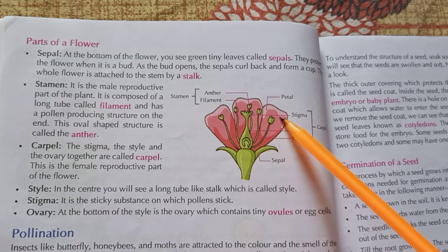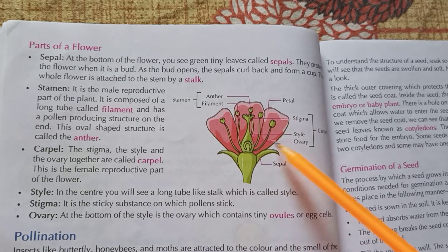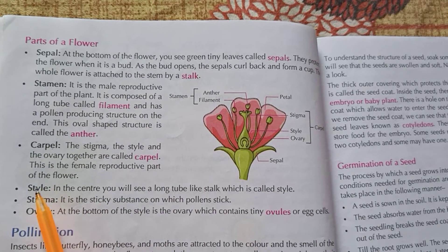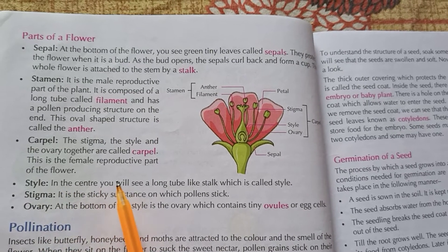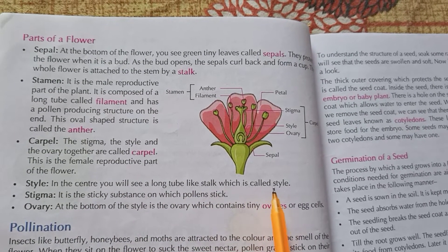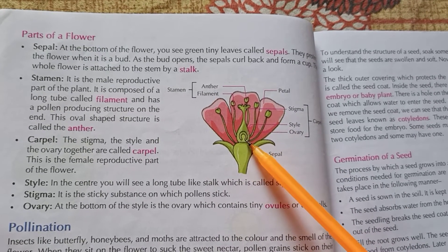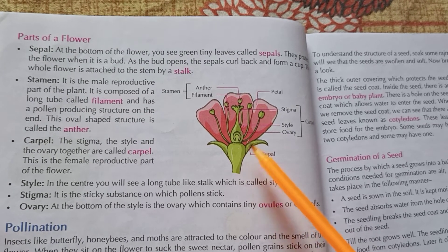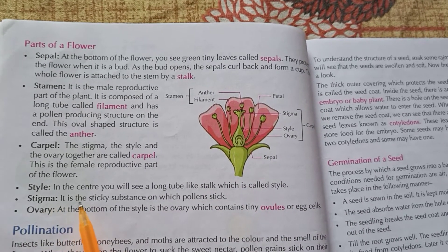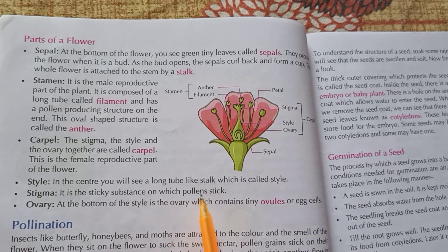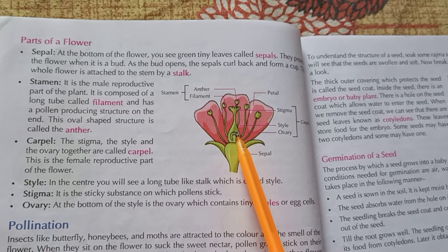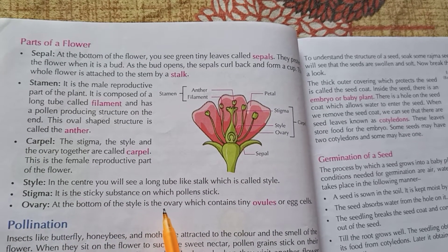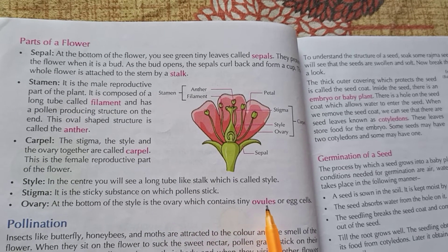This is the stigma. This is the style — a long tube-like structure in the center. The stigma is a sticky substance on which pollen sticks. This is the bottom of the style. At the bottom of the style is the ovary, which contains tiny ovules or egg cells.